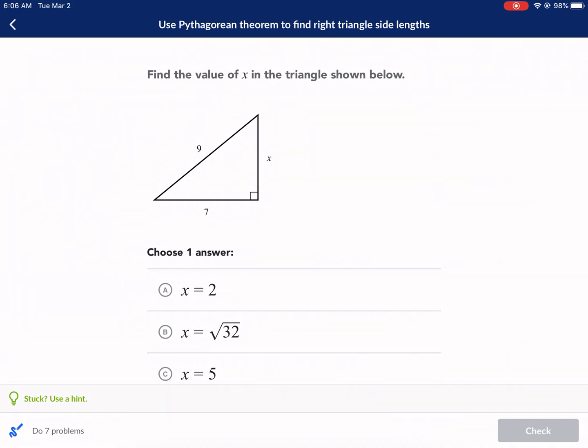Here we are, everyone, on another Khan Academy tutorial. This is Use Pythagorean Theorem to Find Right Triangle Side Lengths, and I am Mr. West. Let's go ahead and start.